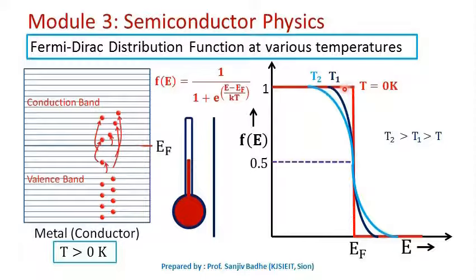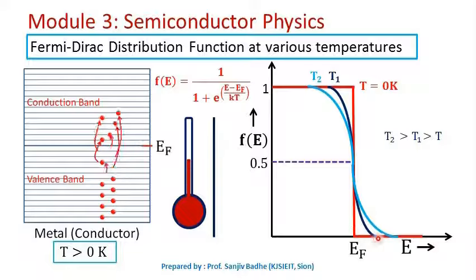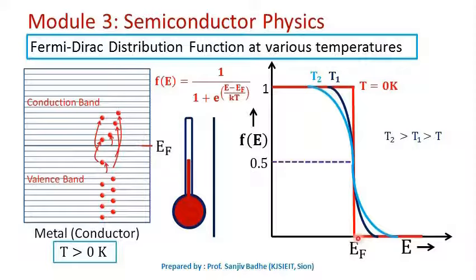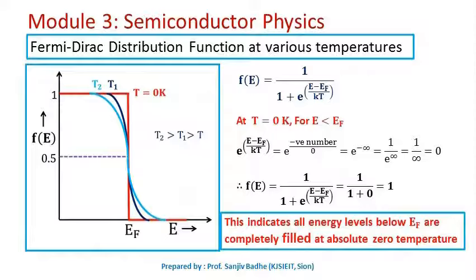As temperature increases, more empty levels are created below the Fermi energy level and more filled levels appear above it. The probability of occupancy just below the Fermi energy level reduces from 1, and just above it increases slightly. As temperature increases further, this effect becomes more pronounced, and this is how the graph of probability of occupancy versus energy looks at various temperatures.